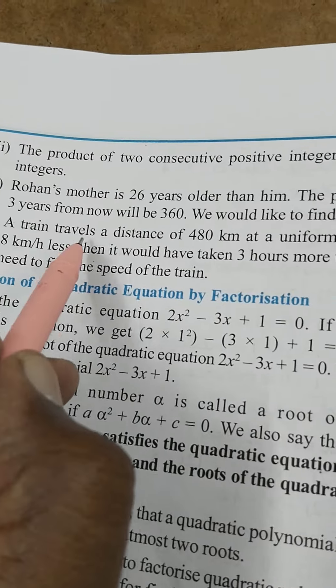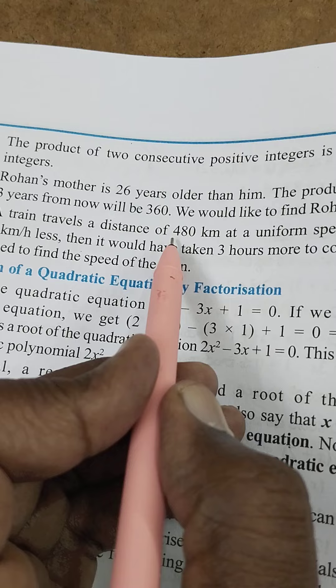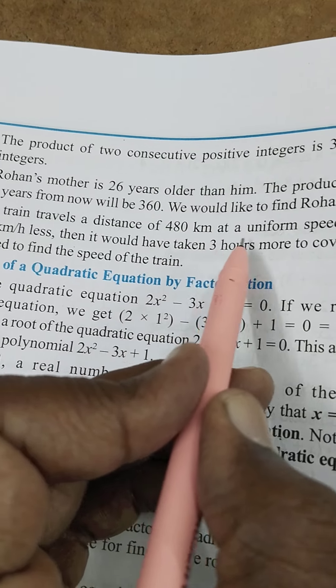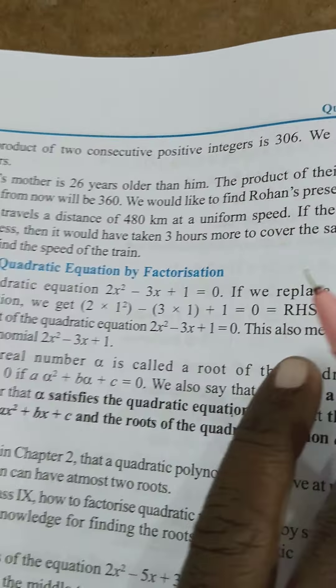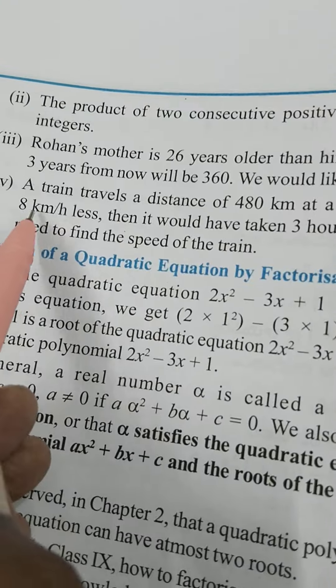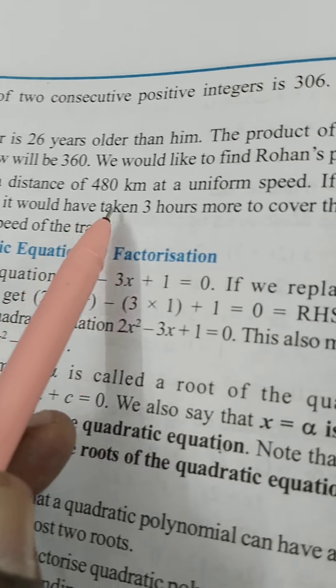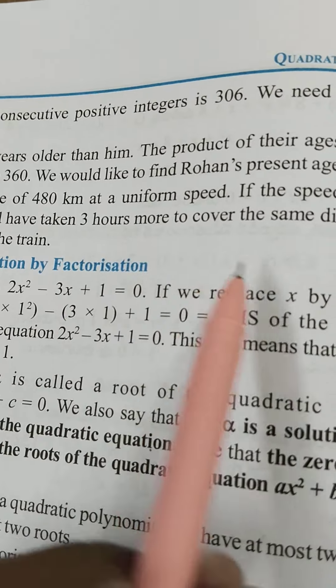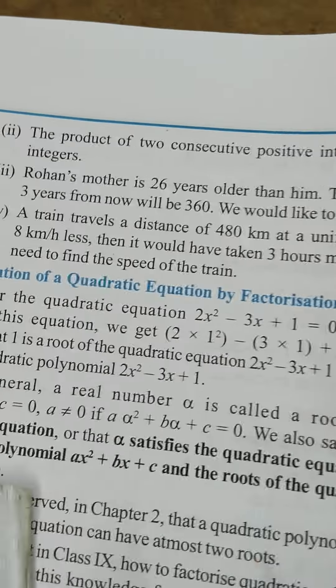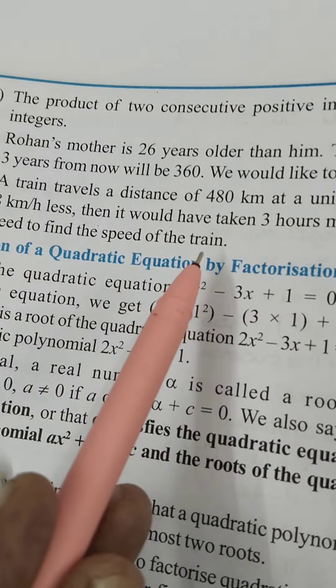A train travels a distance of 480 kilometers at uniform speed. If the speed had been 8 kilometers per hour less, then it would have taken 3 hours more to cover the same distance. We need to find the speed of the train.